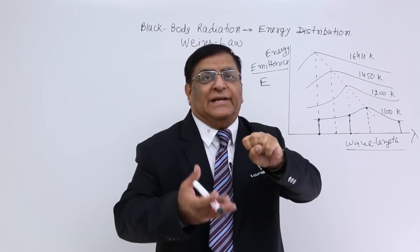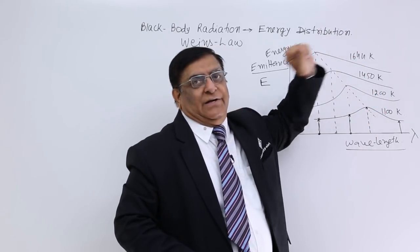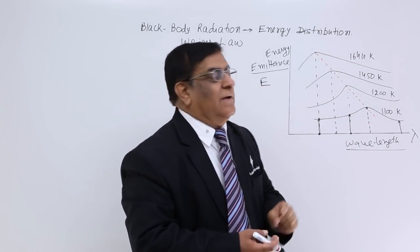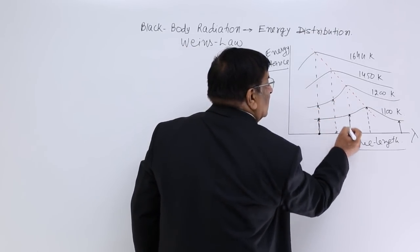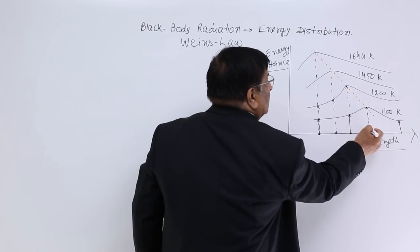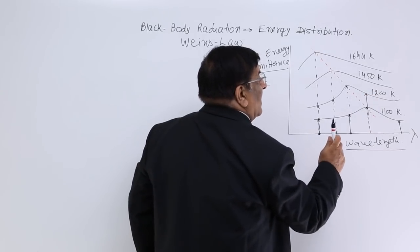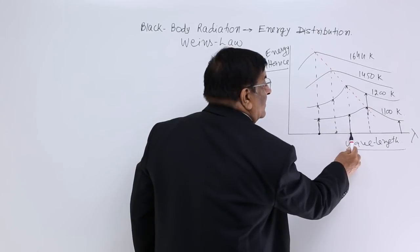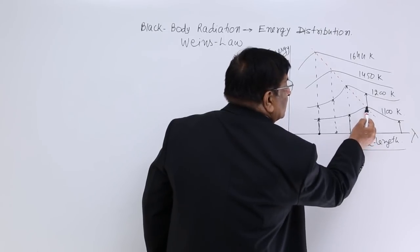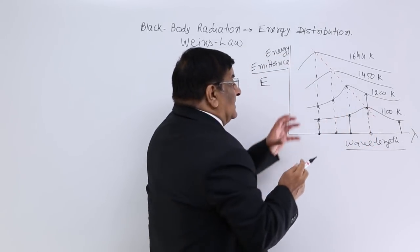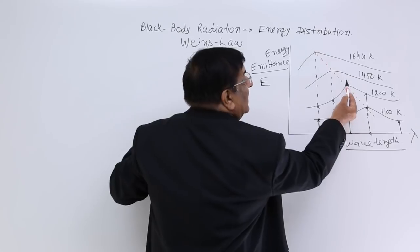Same black body — we raise the temperature. Earlier the temperature was 1100 Kelvin; now we make it 1200 Kelvin. Again we make the graph, plotting energy for each lambda. We find that the lambda which is carrying maximum energy has shifted. At 1100 K, a certain lambda had maximum energy, but when we raise the temperature to 1200 K, it is a smaller lambda which has got higher energy.